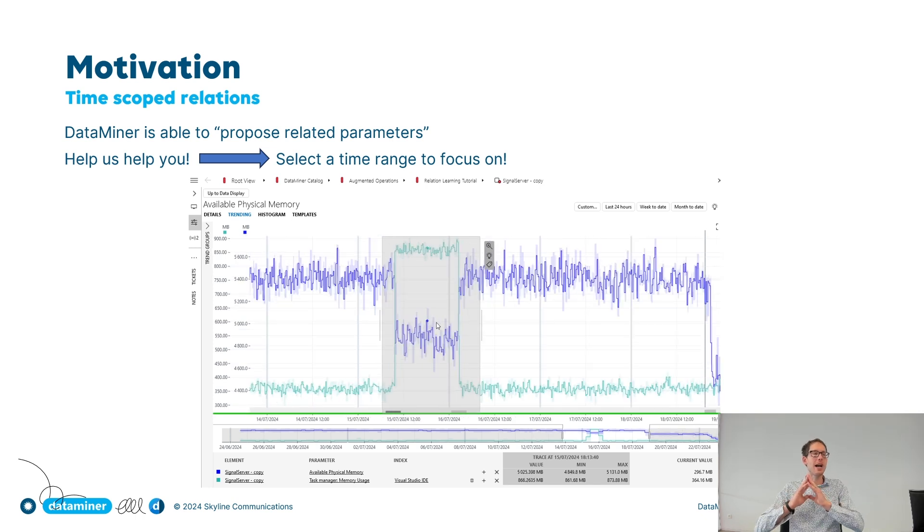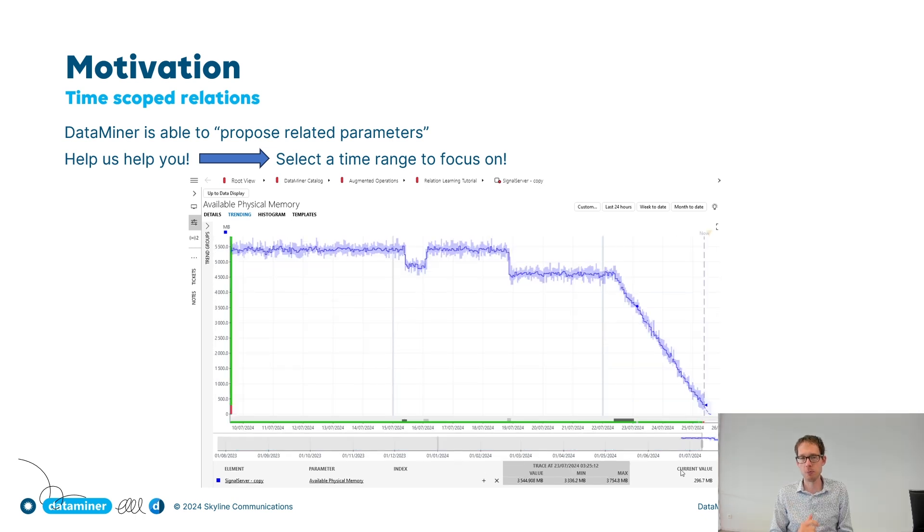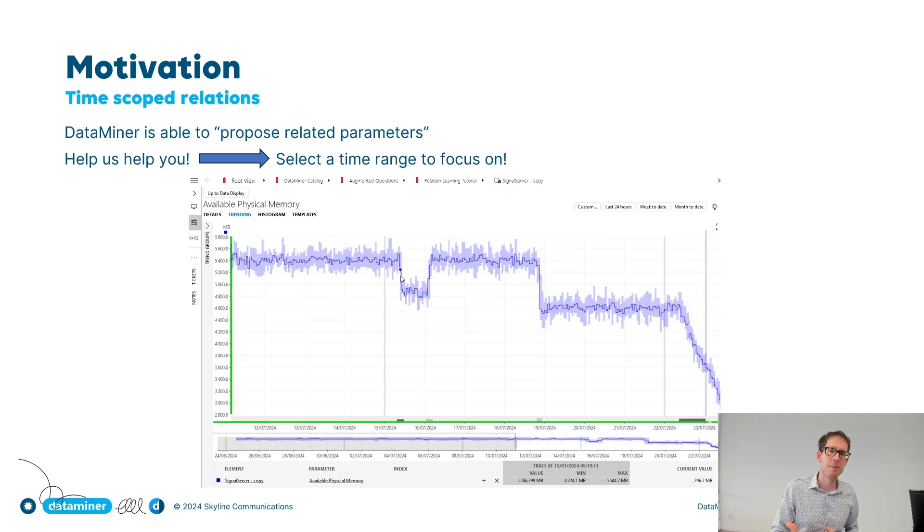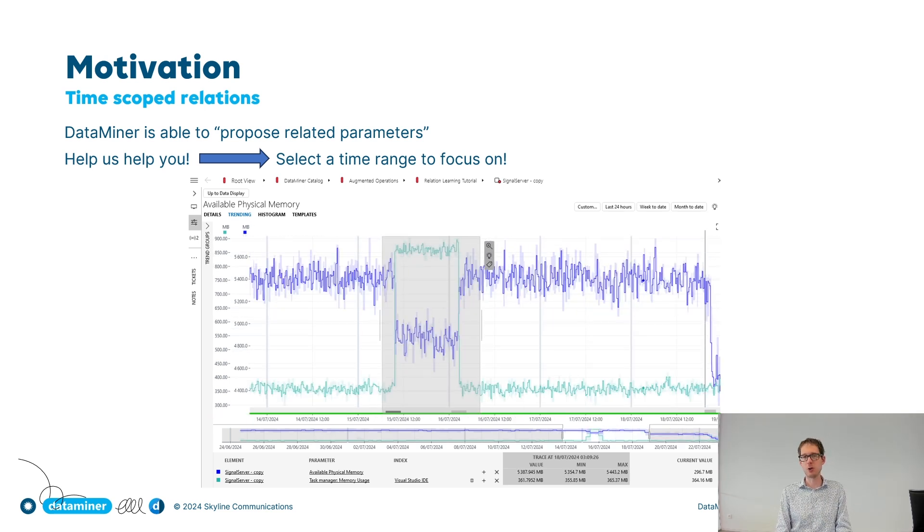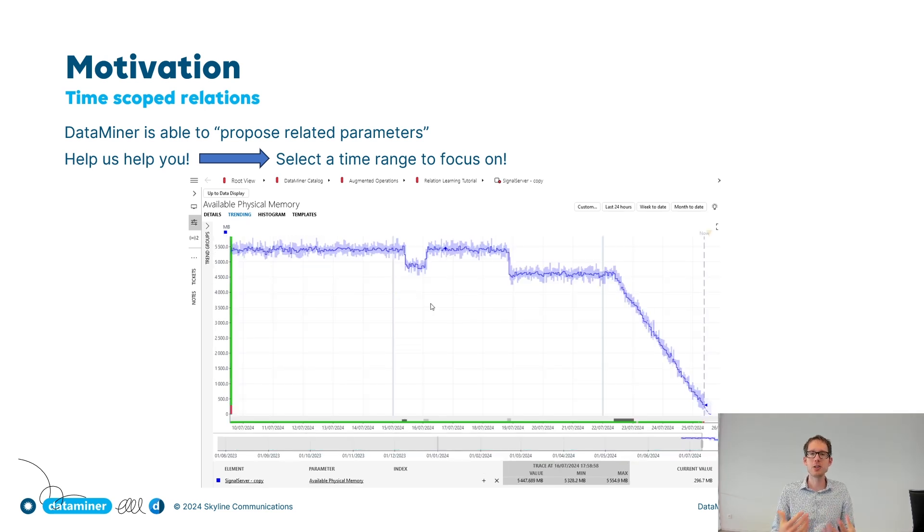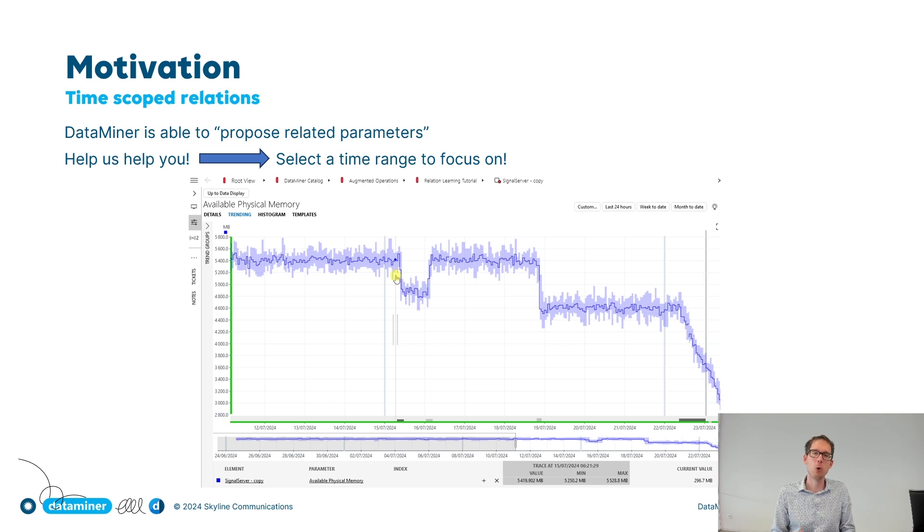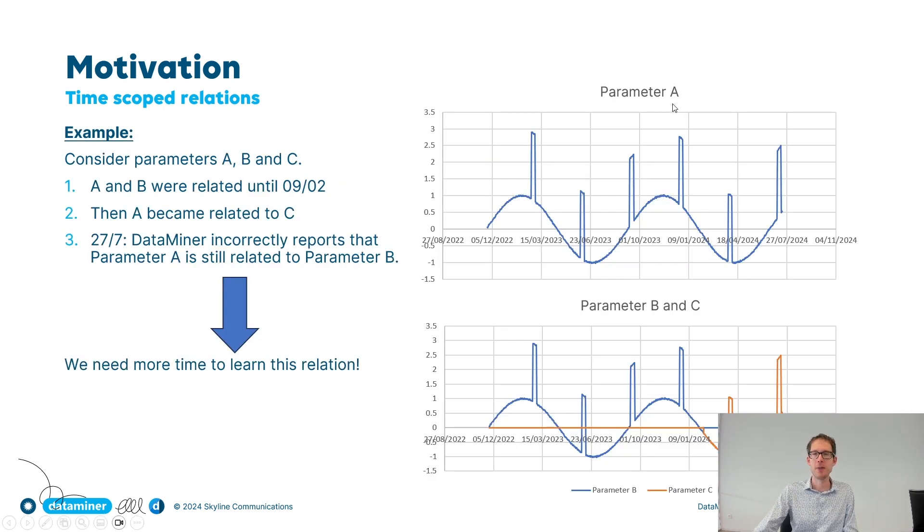So the top right light bulb uses the relation learning algorithm that's running in the cloud, and it doesn't take into account the time range that you're interested in. It takes into account the entire behavior of the parameter. But sometimes it's much more interesting if you can tell the system, hey look, I'm really interested in this moment of time. And this you can do with time scoped relation learning.